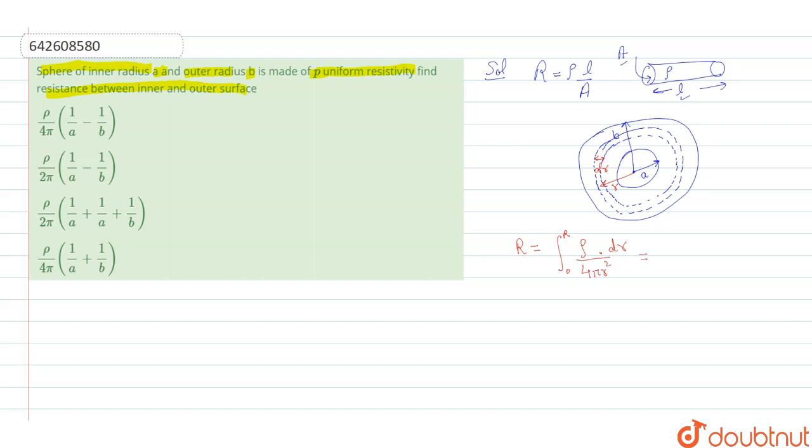Now, we apply the actual limit as per the diagram that is from A to B. Rho upon 4 pi into 1 upon R square dot dr.